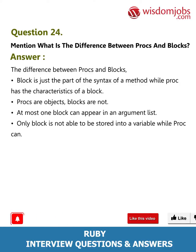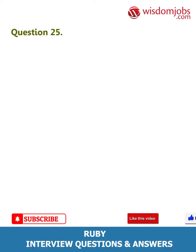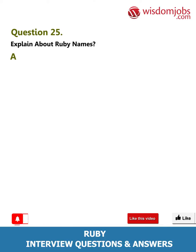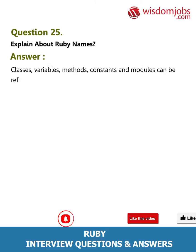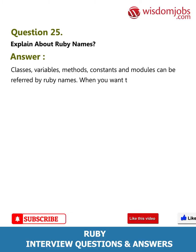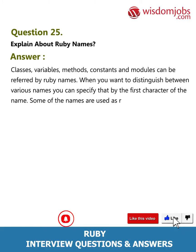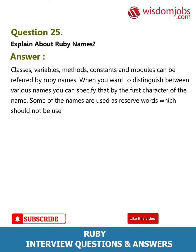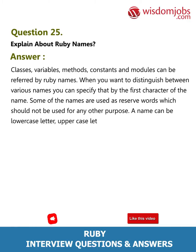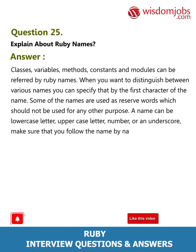Question 25: Explain about Ruby names. Answer: Classes, variables, methods, constants, and modules can be referred to by Ruby names. When you want to distinguish between various names, you can specify that by the first character of the name. Some names are used as reserved words and should not be used for any other purpose. A name can be a lowercase letter, uppercase letter, number, or underscore, followed by name characters.